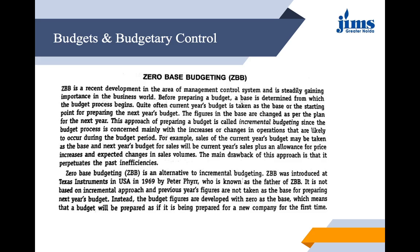For example, the sales of the current year's budget may be taken as the base, and the next year's budget for sales will be the current year's sales plus an allowance for price increase and expected changes in sales volume. The main drawback of this approach is that it perpetuates past inefficiencies. ZBB was introduced as an alternative to incremental budgeting.